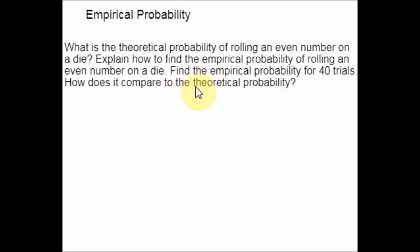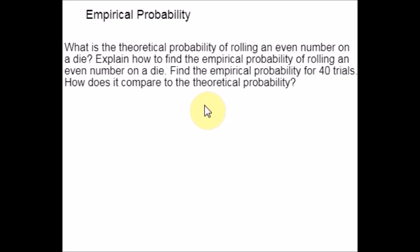Here is another example where we can find both the theoretical and empirical probability. The question asks: What is the theoretical probability of rolling an even number on a die? Explain how to find the empirical probability of rolling an even number on a die. Find the empirical probability for 40 trials, and compare it to the theoretical probability. The theoretical probability is 50%. A die can be rolled and the number of times an even number appears is noted; the empirical probability is the ratio of even-number rolls to total rolls.